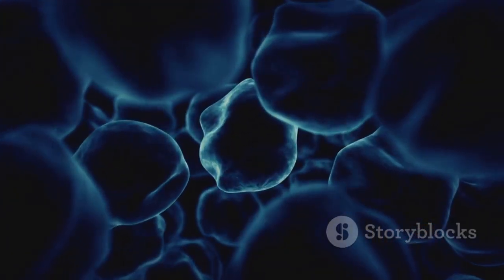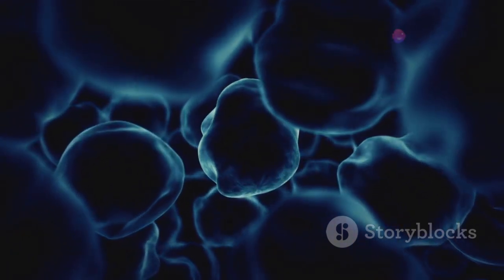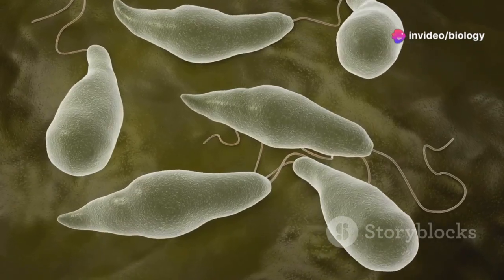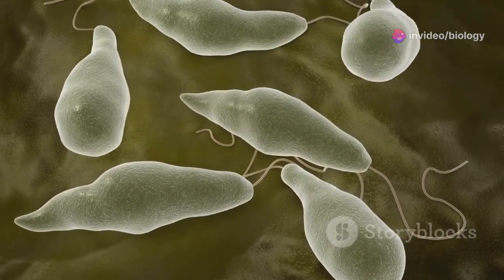Prokaryotic cells also have ribosomes, tiny protein-making machines that are essential for their survival. Some prokaryotes even have flagella, whip-like structures that help them move around. Pretty cool, right?